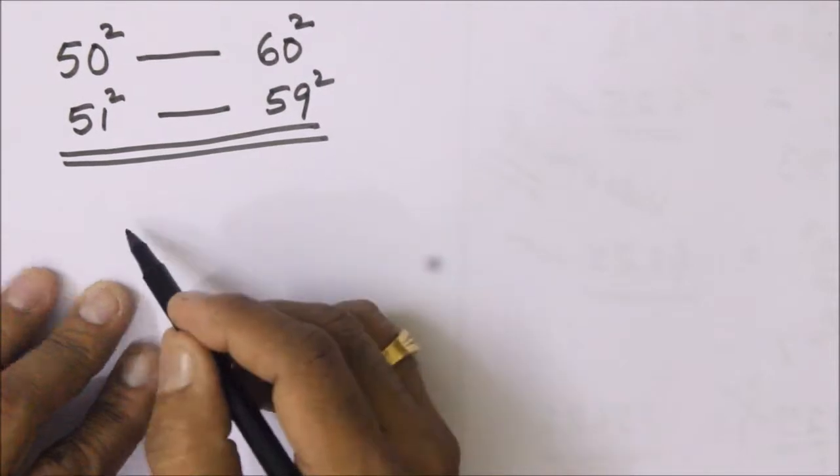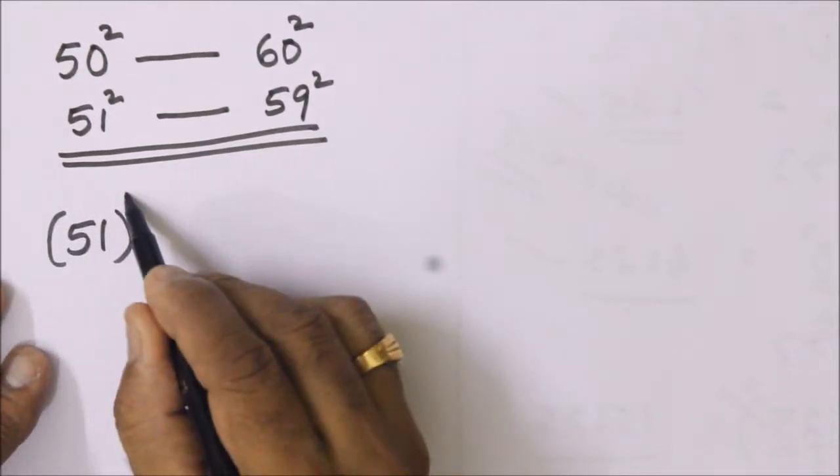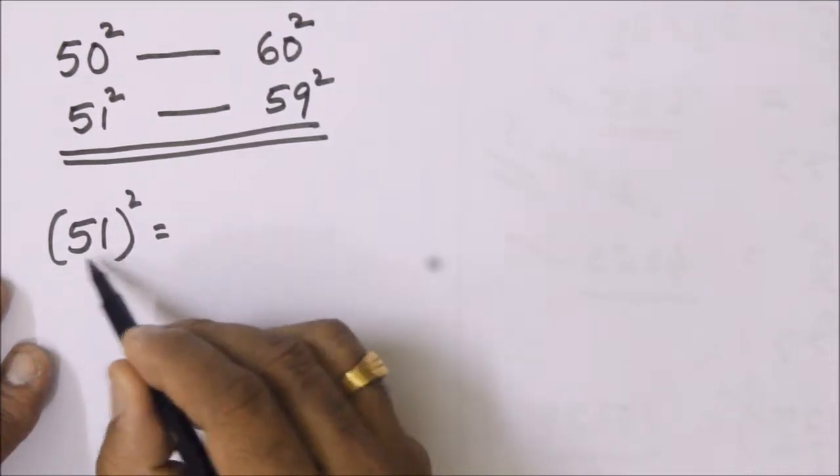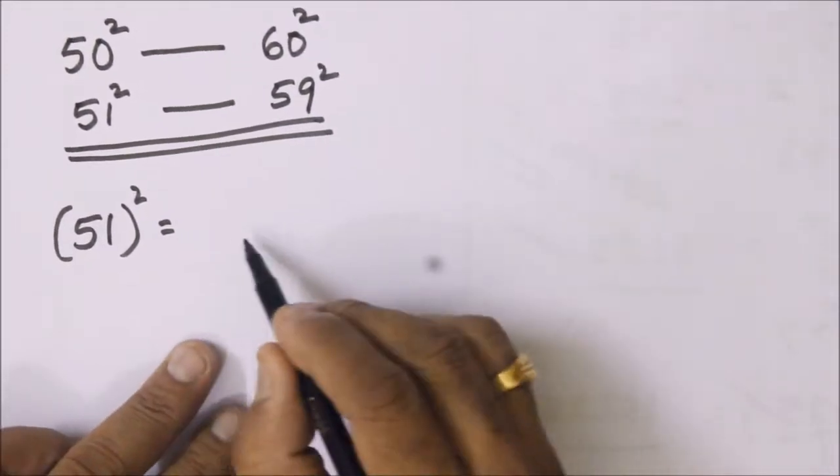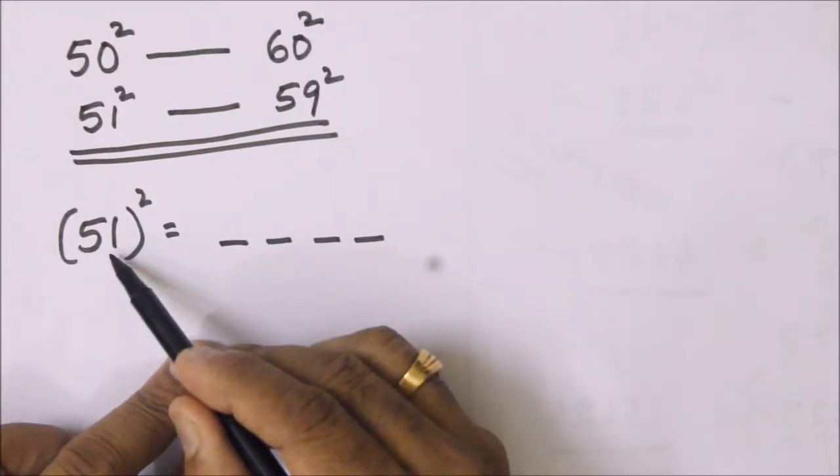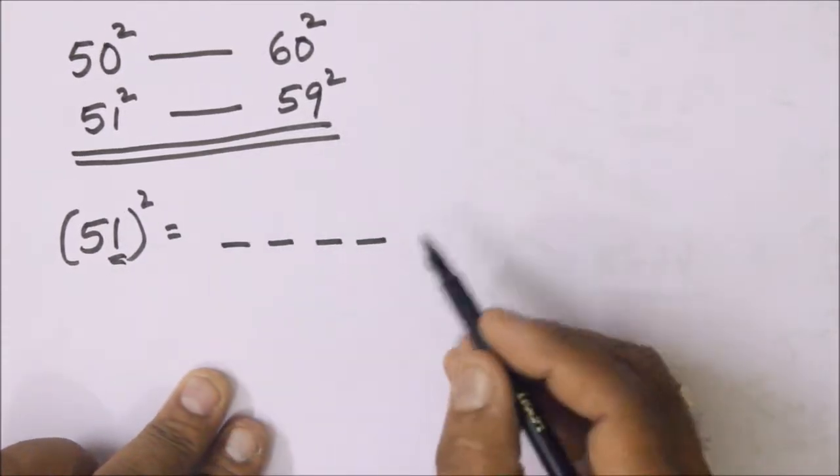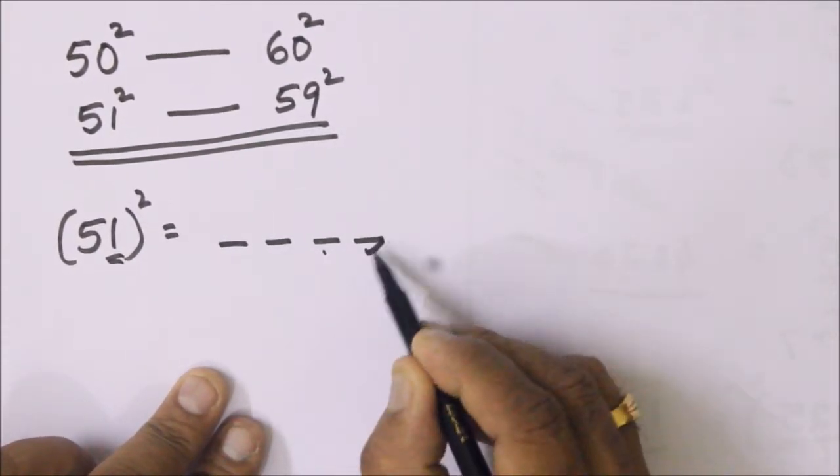Let's take the first number 51. Its square, we know, is a two-digit number, so its square has four digits. The unit space is 1. 1 square is 1, so 1 takes the position of units and tens. Since it has only 1, tens place takes 0.